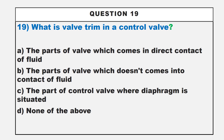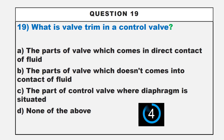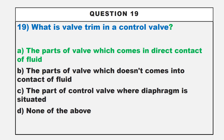Our next question is: what is valve trim in a control valve? Option A: the parts of the valve which come in direct contact with fluid. Option B: the parts of valve which don't come into contact with fluid. Option C: the part of control valve driven from an actuator. Option D: none of the above. The correct answer is option A, the parts of the valve which come in direct contact with fluid.